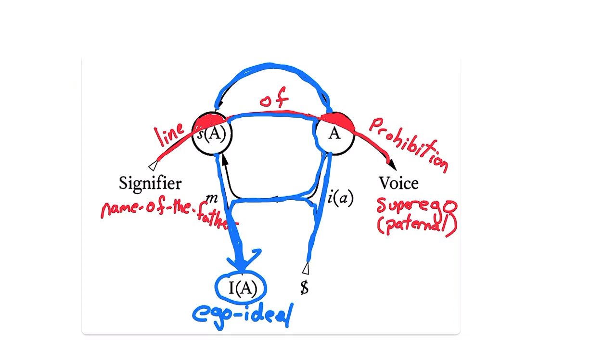The articulation of need as demand first gets formulated in passing through the locus of signifiers located at the place of the big other, which then gets quilted to a particular meaning. The message then reappears as a reformulated demand passed on to the ego ideal.